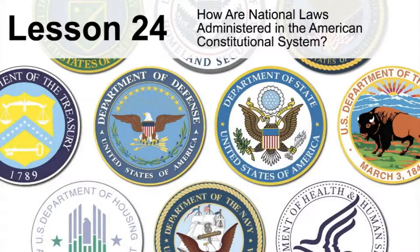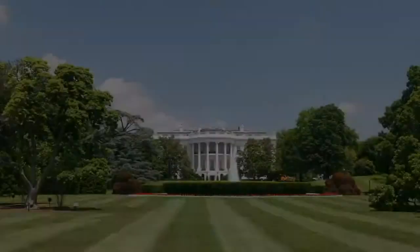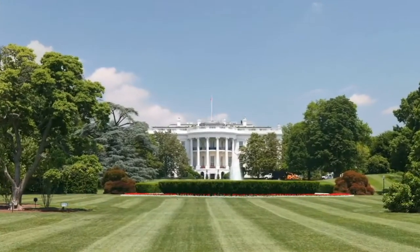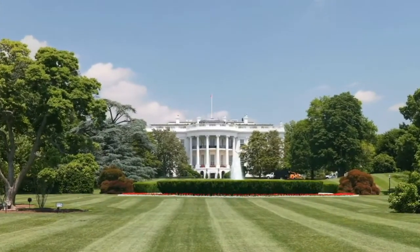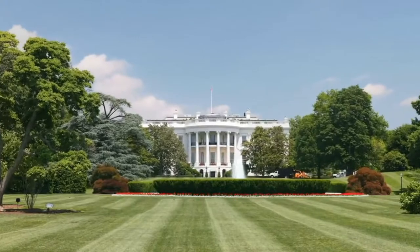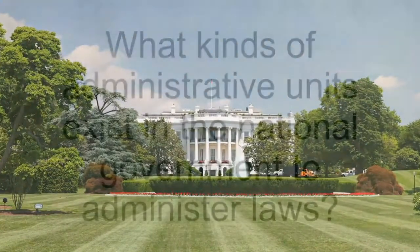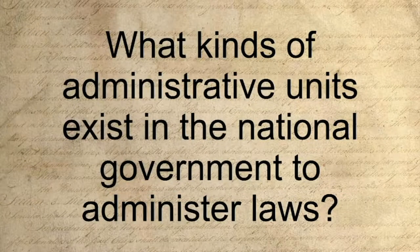Lesson 24 focuses on the question: how are national laws administered in the American constitutional system? It seems pretty obvious that the wide range of laws passed by Congress can't all be administered by the president or the White House. So let's examine what kinds of administrative units exist in the national government to administer laws.